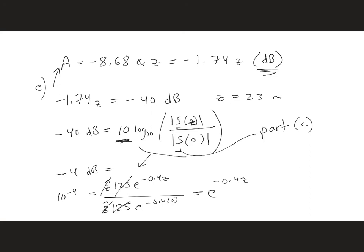So we can take the natural logarithm of both sides. We have ln 10 to the minus 4 is minus 0.4z. And again, if we solve for z, we get 23 meters.